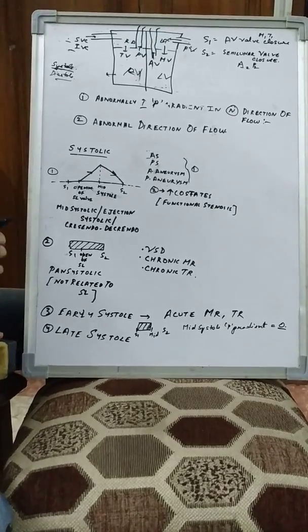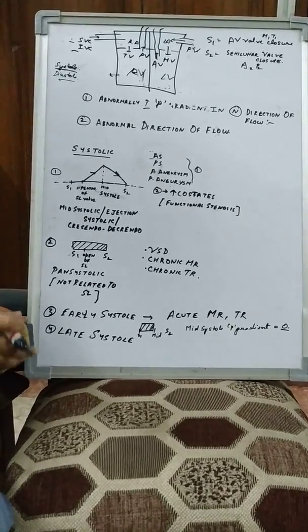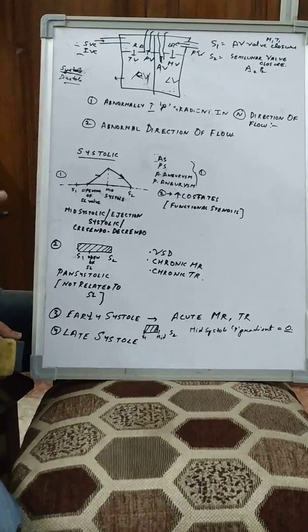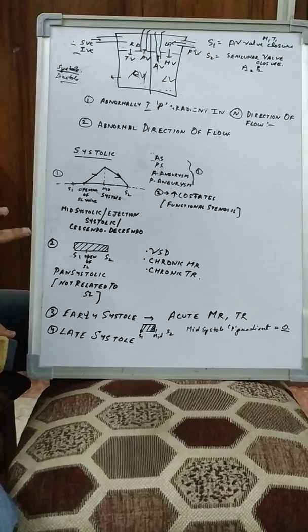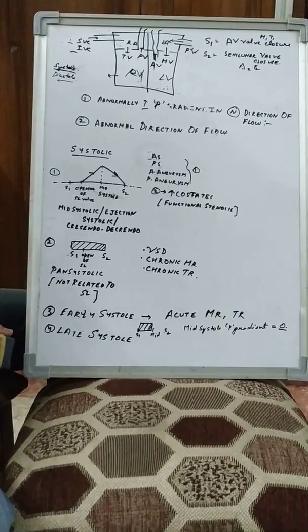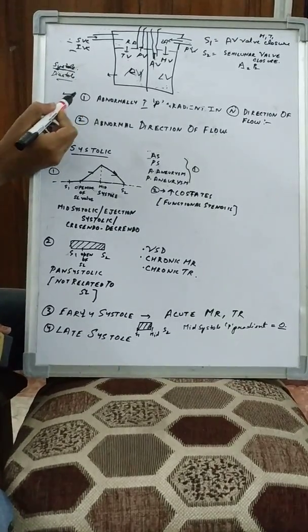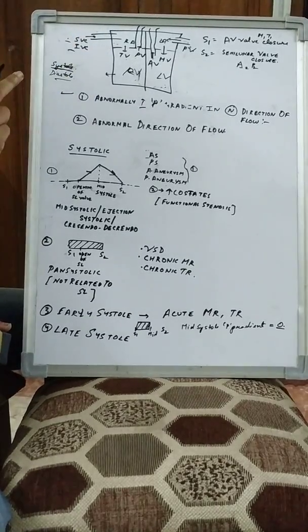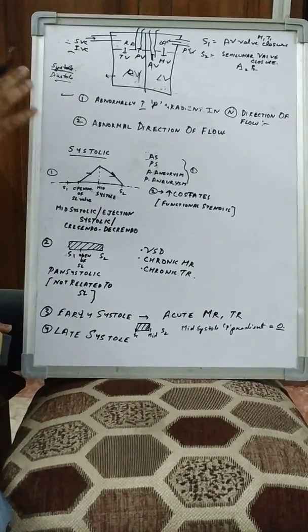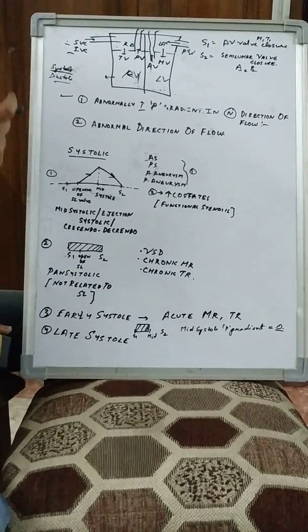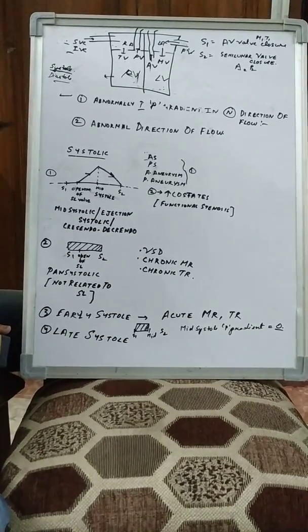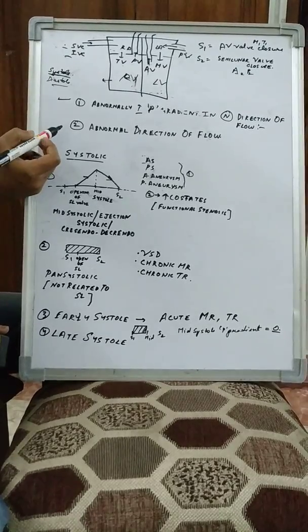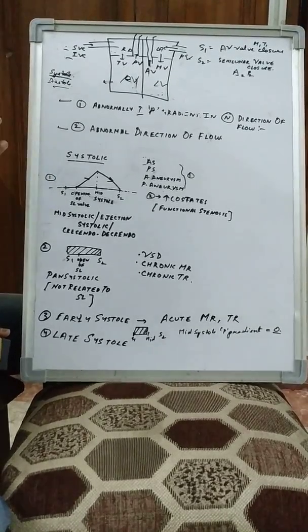Murmurs are abnormal sounds heard during the cardiac cycle. They are heard due to two causes. Cause number one is abnormally increased pressure gradient in a normal direction of flow — for example, normal direction of flow is right atrium to right ventricle, and if the normal pressure gradient is exceeded it will cause a murmur. Cause number two is that the direction of flow itself is also abnormal.